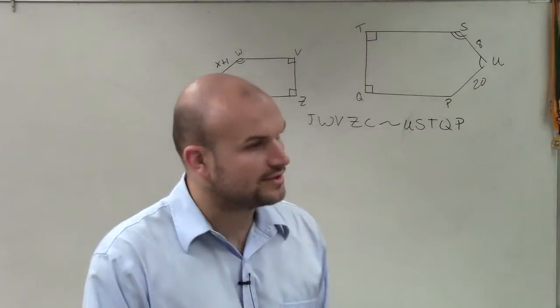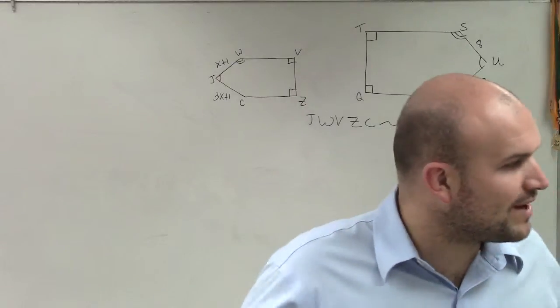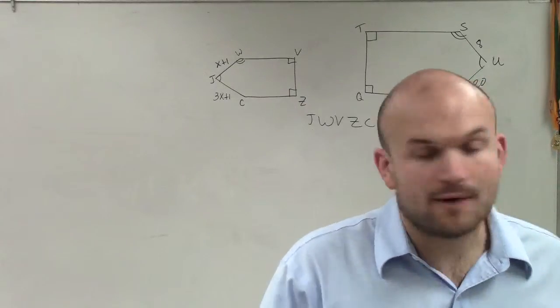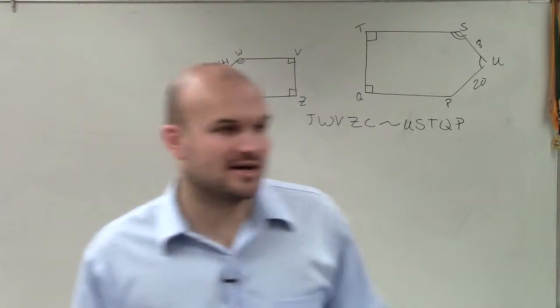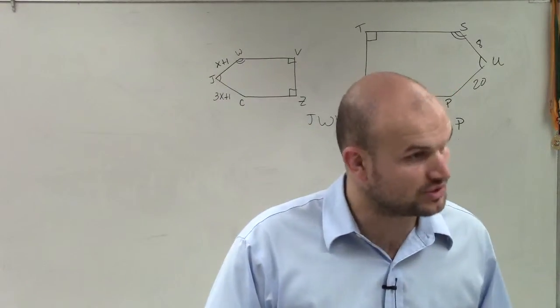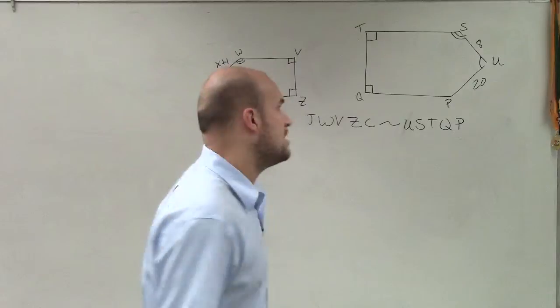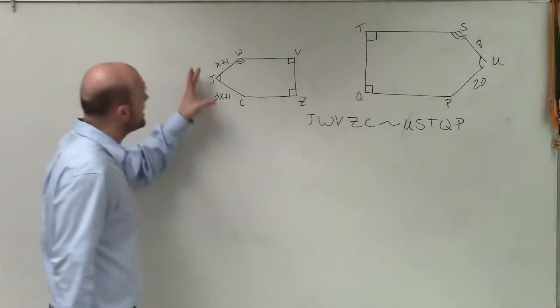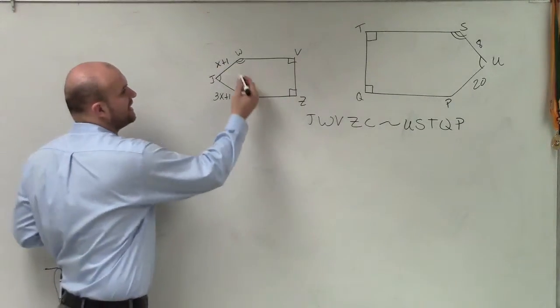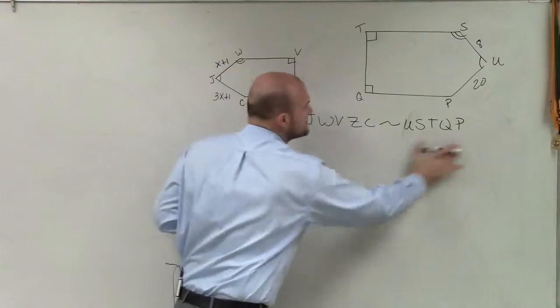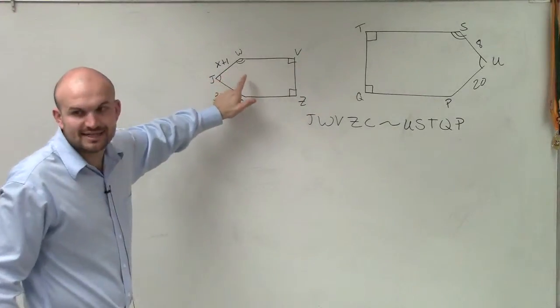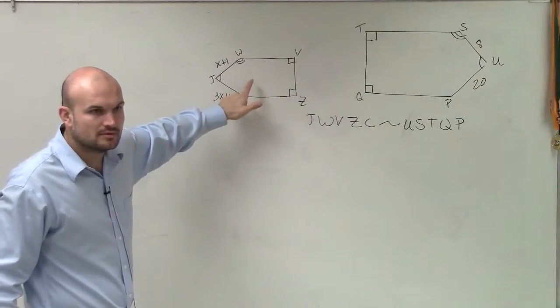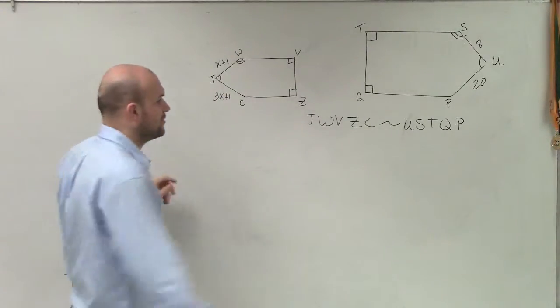So those are going to be similar to each other. Now, what I want to do is rewrite sides that we can write a proportion for. Because we can't solve anything of similarity unless we have a proportion. So one thing I want to look at here is, so if you guys see, here's my similarity statement, right?